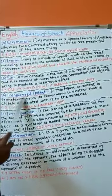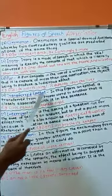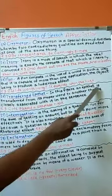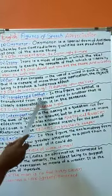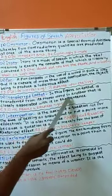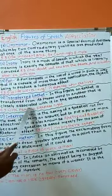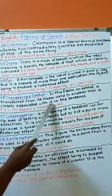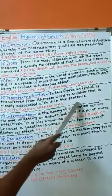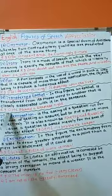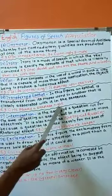Next type, Transferred Epithet. In this figure, an epithet is transferred from its proper word to another that is closely associated with it in the sentence. For example, he passed a sleepless night.